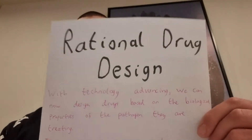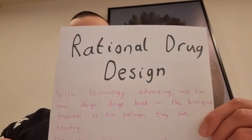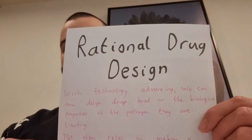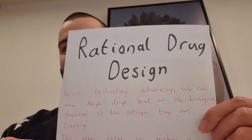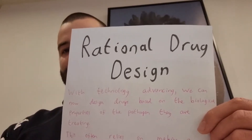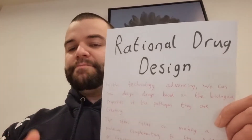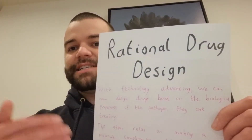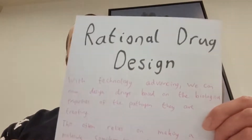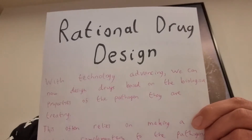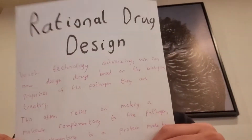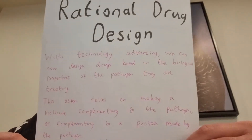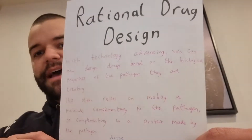So basically, with technology advancing, we can now design medicinal drugs that are based on the properties of the pathogen that they are treating. This is rational drug design — using the biology of the pathogen that we're treating to actually design the drug to treat it. And that may often rely on computer modelling to make a molecule that is complementary to the pathogen or complementary to an enzyme produced by the pathogen.